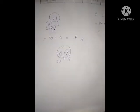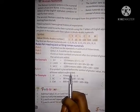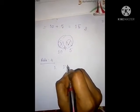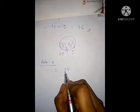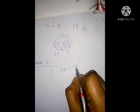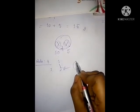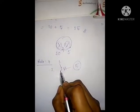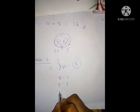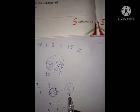Rule 4: If a symbol is placed before the symbol of greater value, the symbol of lesser value is subtracted. For example, IV: the value of V is 5 and the value of I is 1. Since I is placed before the greater value V, we subtract: V minus I equals 5 minus 1 equals 4. So the value of IV is 4.